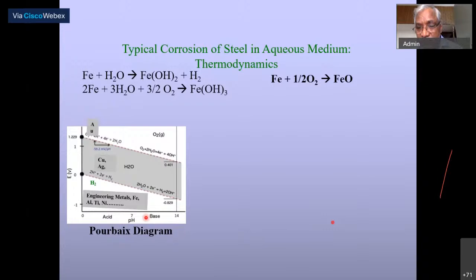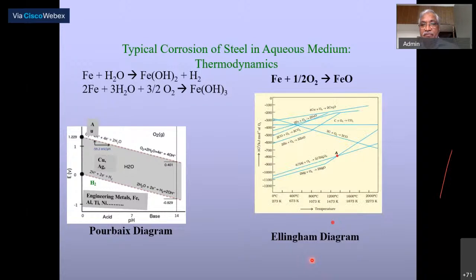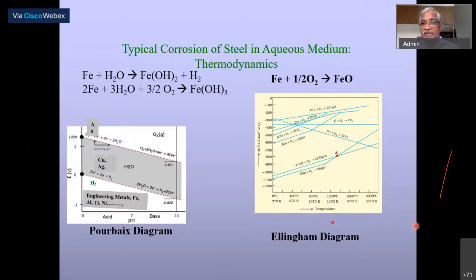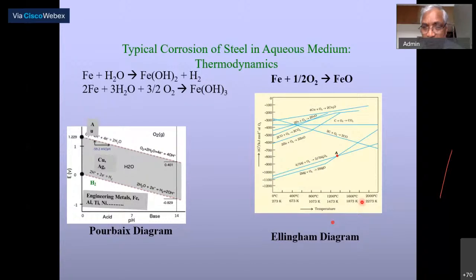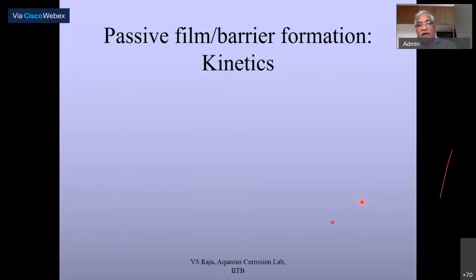For completeness, I would also mention the Ellingham diagram, which plots standard free energy change for oxidation reactions versus temperature. As long as the standard free energy change is negative, the reaction will occur. This is another field of corrosion — high-temperature oxidation — which is covered in a separate course. The key point is that thermodynamics dictates what kind of reaction can really happen in a given corrosion system, and this must be kept in mind when interpreting polarization data, otherwise you may reach wrong conclusions.